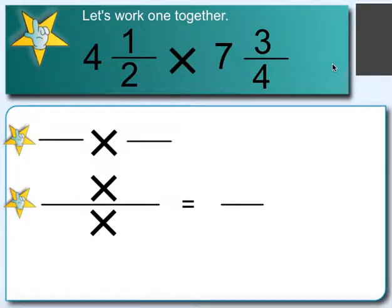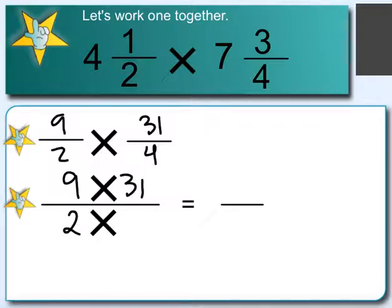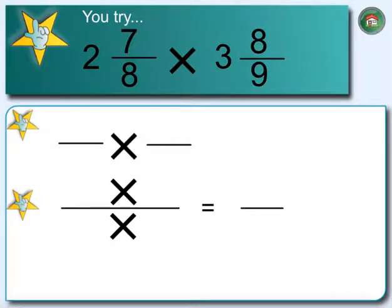If we have 4 and a half times 7 and 3 fourths, we get 9 halves times 31 over 4. It doesn't look like we can simplify anything here, so we do 9 times 31 over 2 times 4, giving us 8 on the denominator. 31 times 9 is 279, so we get 279 over 8. You can try converting to a mixed number on your own — just turn it into an improper fraction and multiply across.